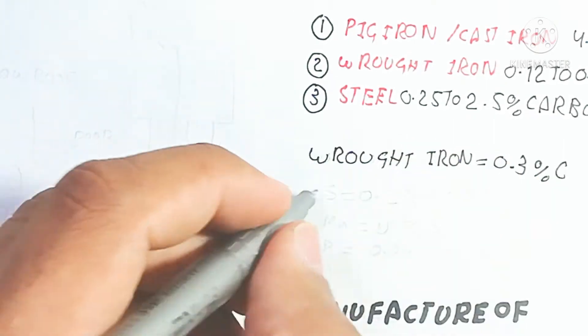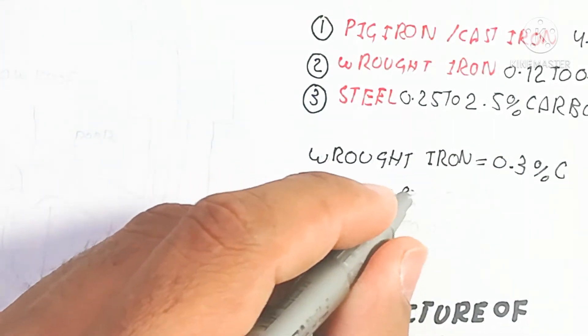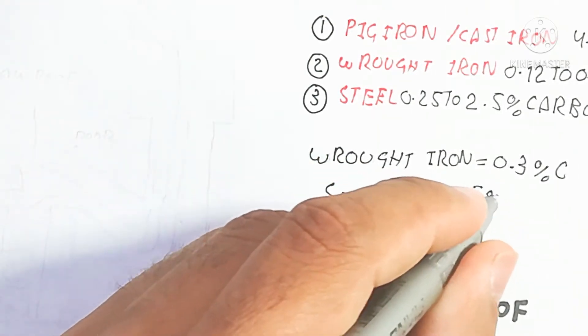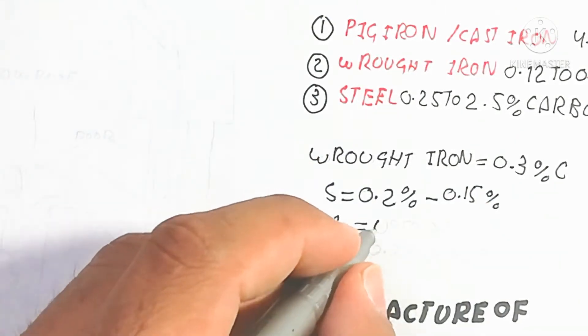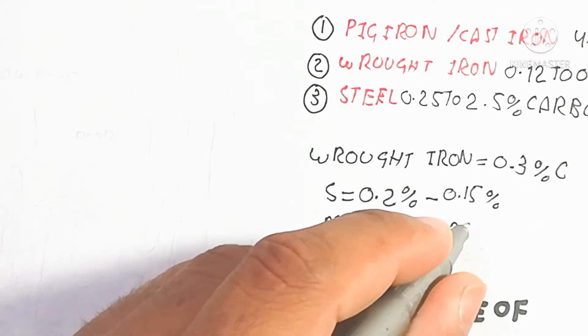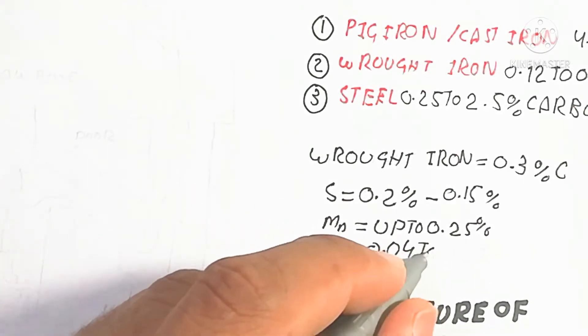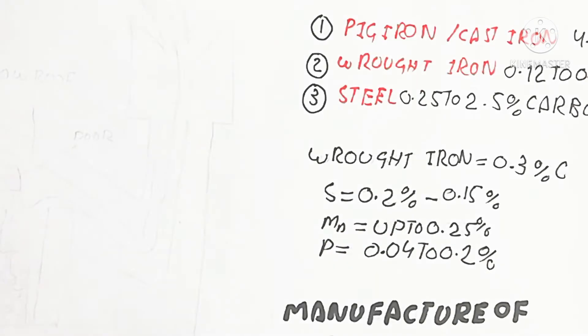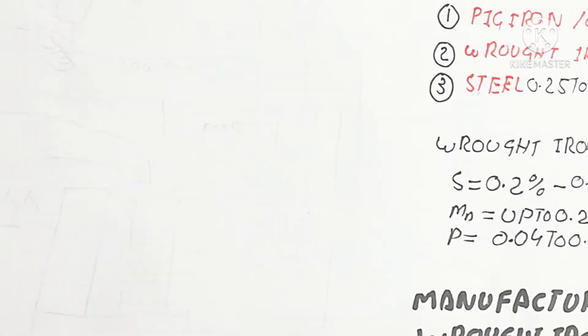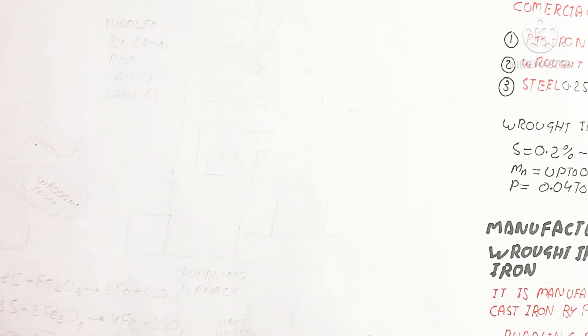Wrought iron contains basically 0.3% carbon and other impurities: silicon, sulfur (0.2% to 0.15%), manganese (up to 0.25%), and phosphorus (0.04 to 0.02%). Other impurities are also added naturally.